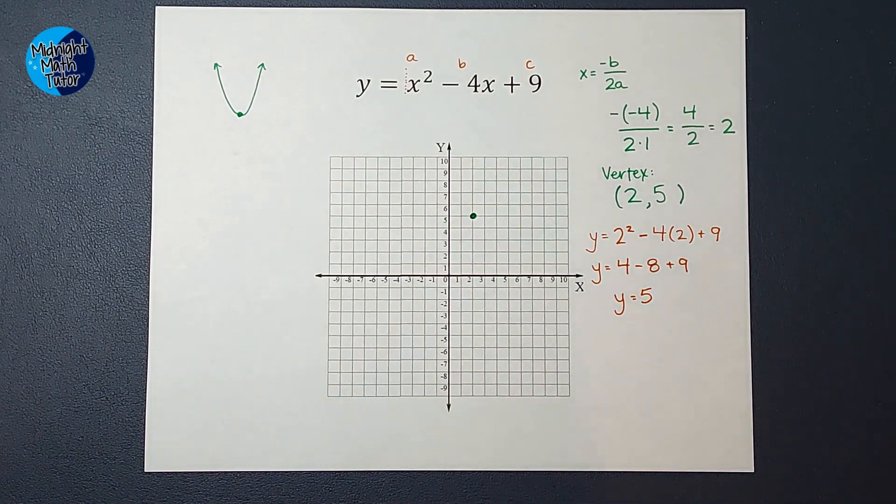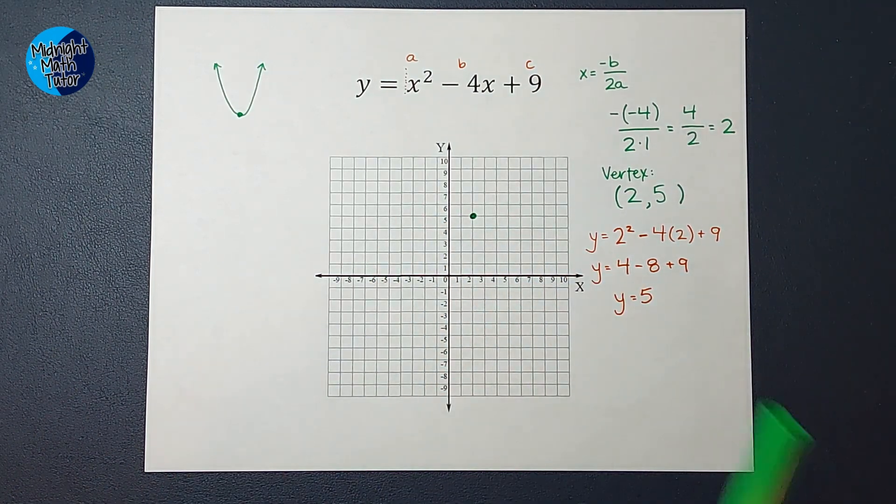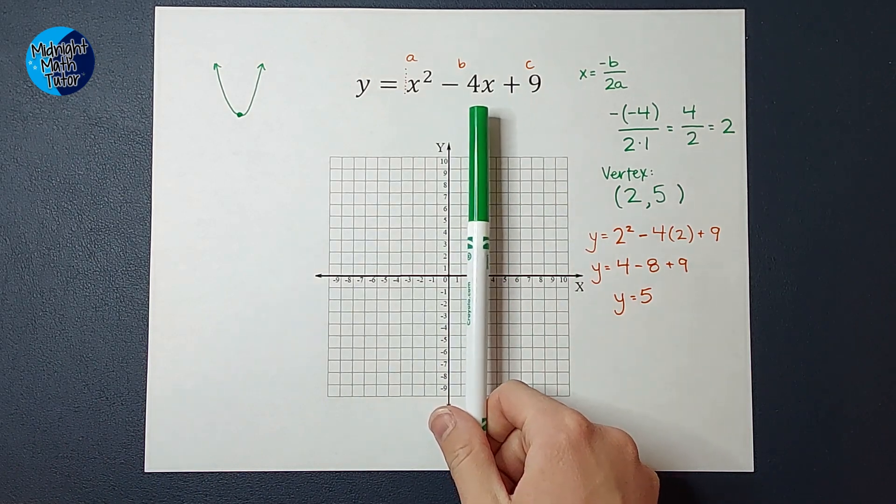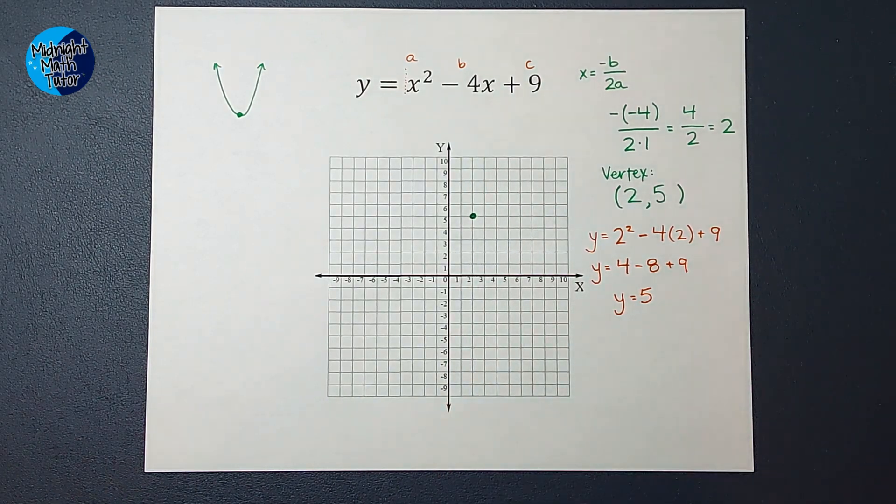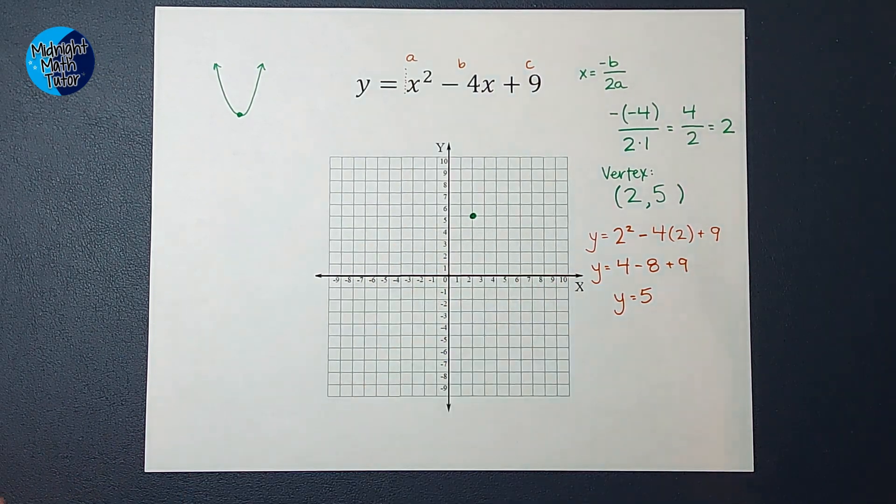Now, kind of like when we graph a line, we like to have at least 2 points. We like to have 2, preferably 3 when we do a parabola, 1 on each side of the vertex. But the good news is parabolas are symmetrical. So if we find 1 on one side, it'll match on the other side.